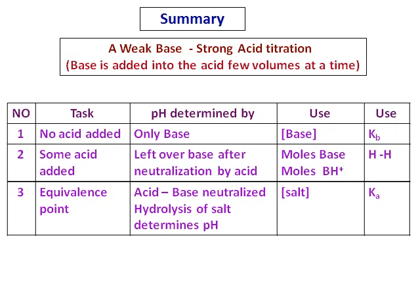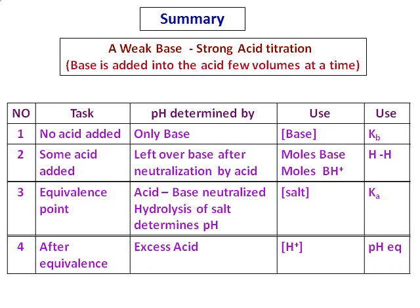The third case is the equivalence point, where acid and base have completely neutralized each other. The hydrolysis of the salt determines the pH, so get the concentration of the salt and use the Ka value to calculate the pH. The fourth case is past the equivalence point: the excess strong acid remaining determines the pH. Get the concentration from the excess acid — that is the hydrogen ion concentration — and use the pH equation to calculate the final pH.